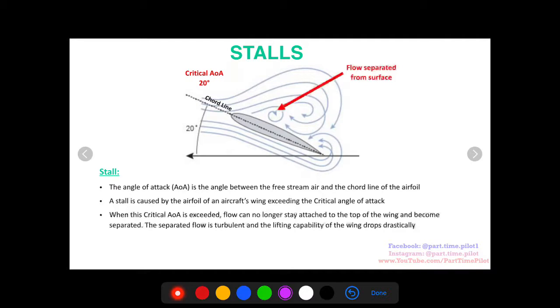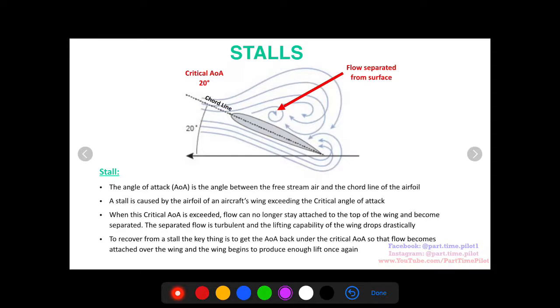We're at that point here on our diagram. When the critical AOA is exceeded, flow can no longer stay attached to the top of the wing and becomes separated. Usually the flow stays attached to the wing and follows the shape of the wing, like it's doing here on the bottom. But when you exceed the critical angle of attack, the flow can't turn the corner sharp enough—instead it separates from the wing and starts to make these vortices behind the wing. This causes a huge reduction in lift.